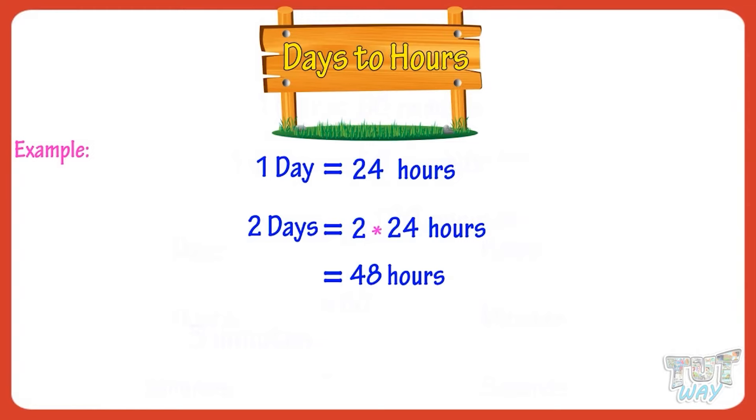Now let's calculate the number of hours in three days. Three days equals 24 plus 24 plus 24 equals 24 multiplied by 3 equals 72 hours.